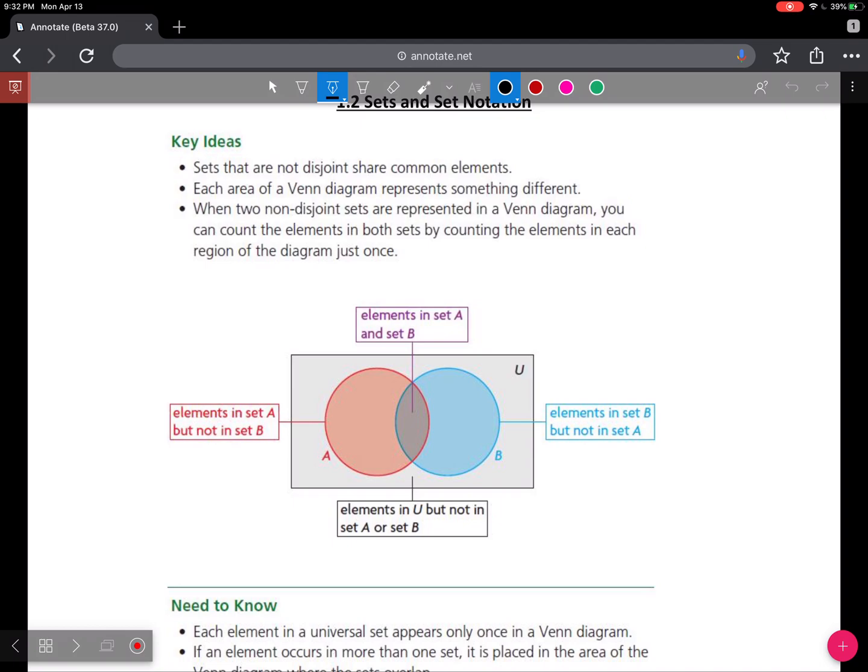Key Ideas: Sets that are not disjoint share common elements, and that's depicted in this image here. So you can see that the two circles representing A and B do in fact overlap, and that section that overlaps kind of looks like a football shape. We call that the intersection.